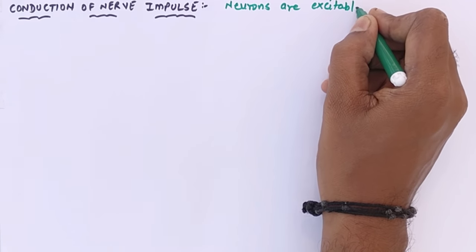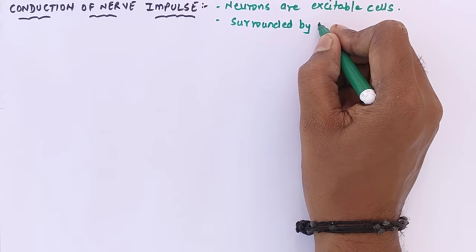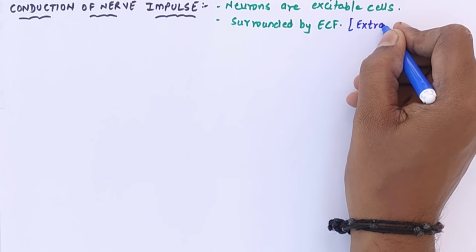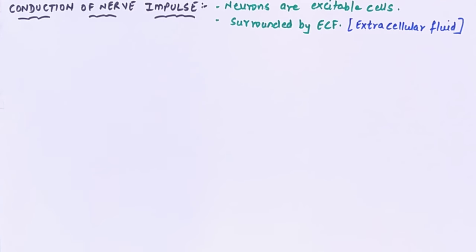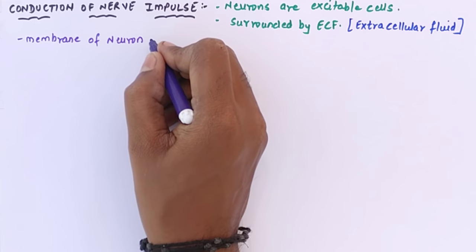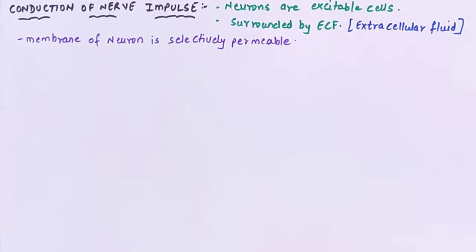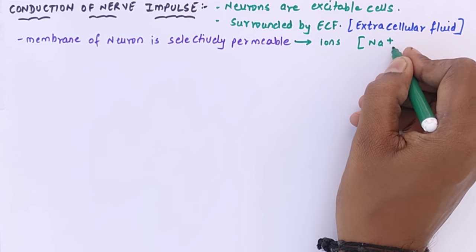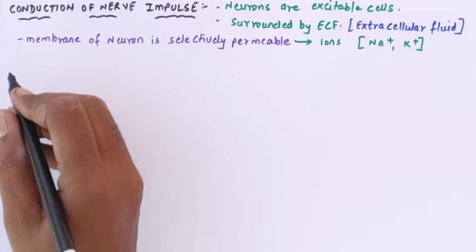Excitable cells means they get excited on exposure to a stimulus. These neurons are surrounded by a number of neuroglia cells and a fluid called ECF — extracellular fluid. The ECF is rich in Na+ and K+ ions. The membrane of the neuron is selectively permeable, meaning it allows selected ions to enter. Neurons have an ion-exchanging pump, so Na+ and K+ ions get exchanged between the axon and ECF through the sodium-potassium pump.